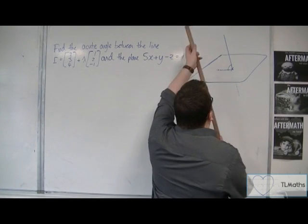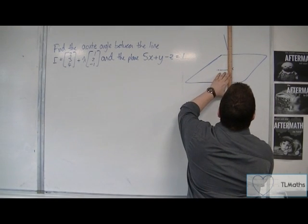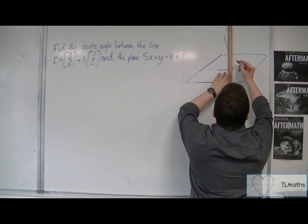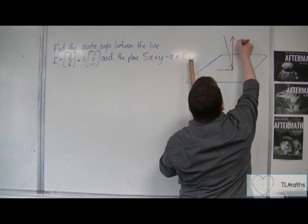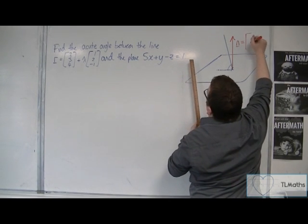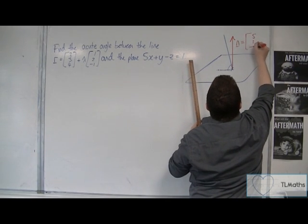So I know the vector that is normal to the plane. So let's put that in. That's n, which is given by this 5, 1, minus 1.